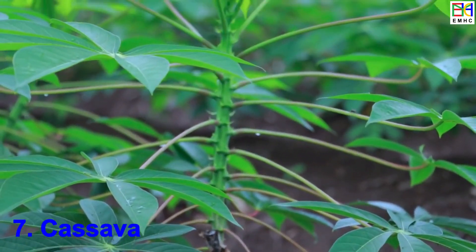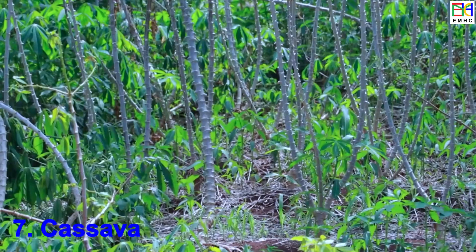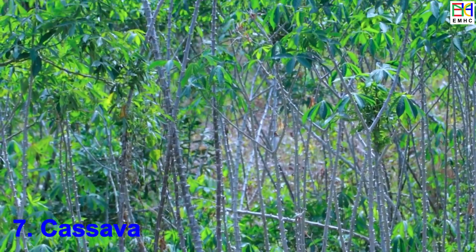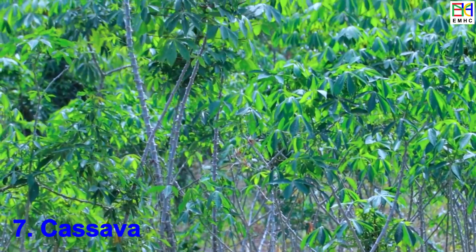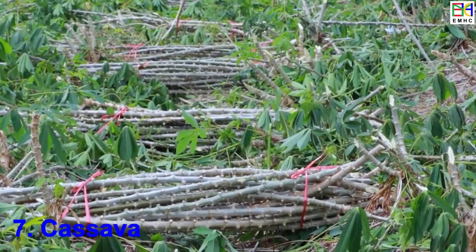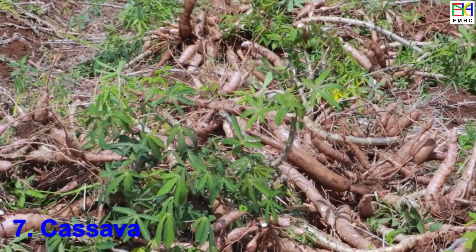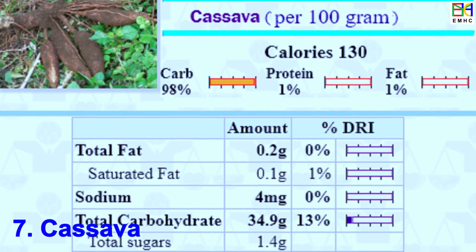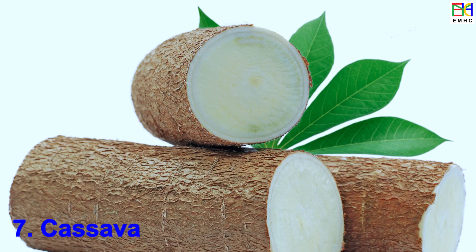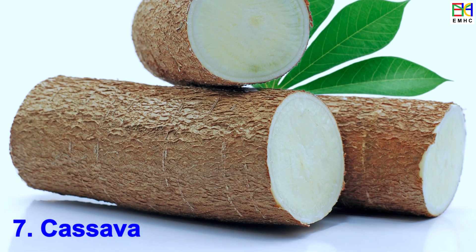Cassava is native to South America and was first cultivated in the Amazon basin. Today, the largest producers of cassava are Nigeria, Thailand, Indonesia, Brazil, and the Democratic Republic of Congo. Global production exceeds 290 million metric tons annually. Cassava is a good source of carbohydrates, and is relatively low in protein and essential nutrients compared to other staple crops.